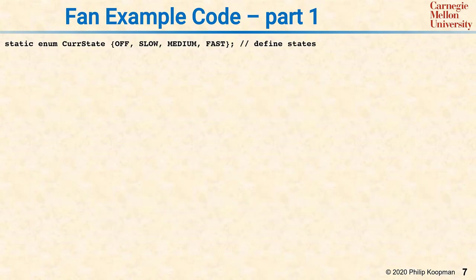Let's look at some code to implement the state chart we just saw with the two button fan. In any state chart, there has to be a variable keeping the current state, cur_state. And in this case, we've defined it as an enum that can be off, slow, medium, or fast.